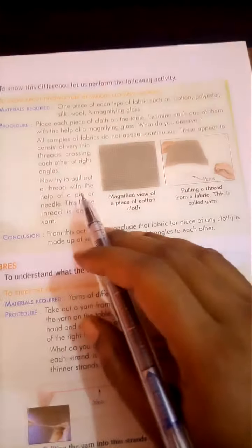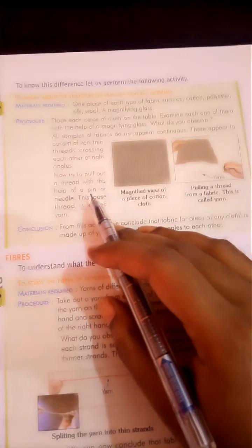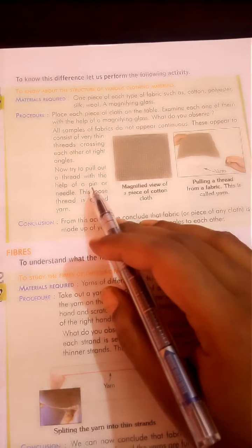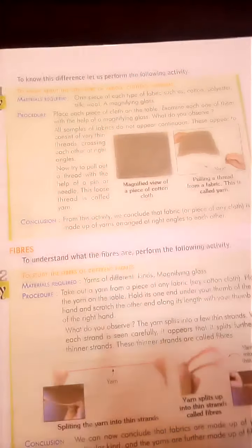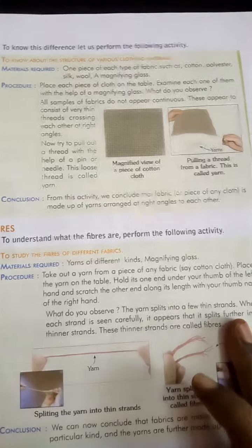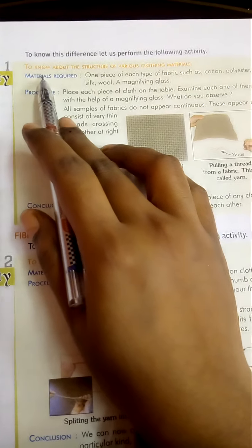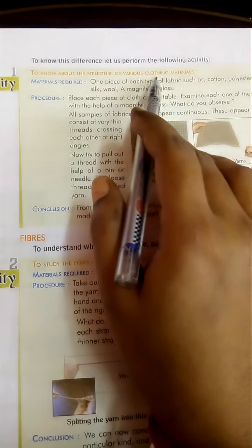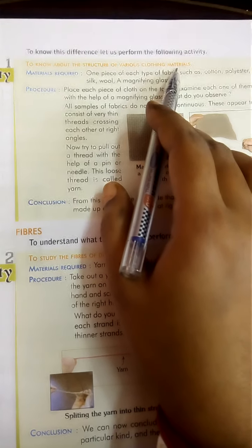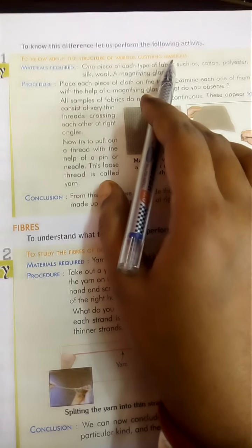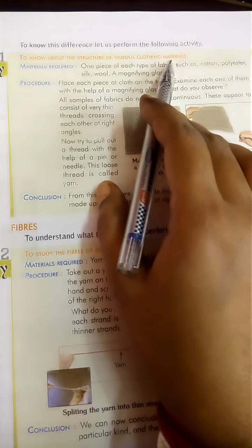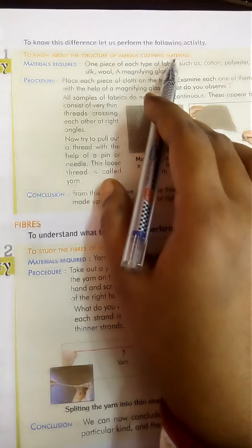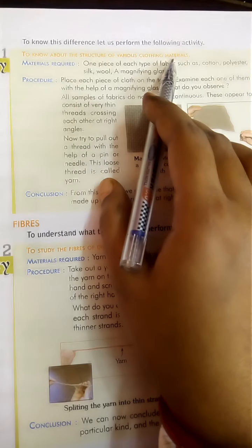Now let's look at page number 35, where there are two activities: Activity 1 and Activity 2. We will first study these activities. In Activity 1, the aim is to know about the structure of various clothing materials.